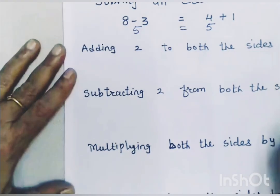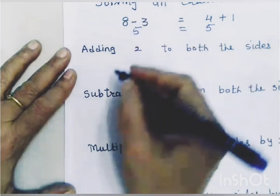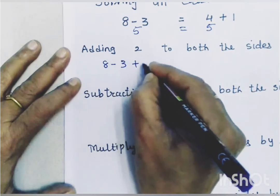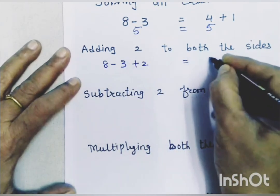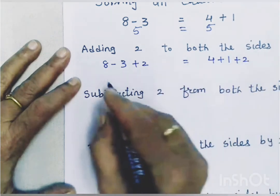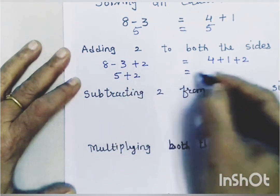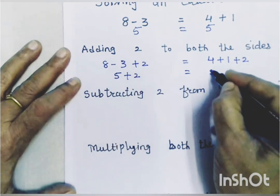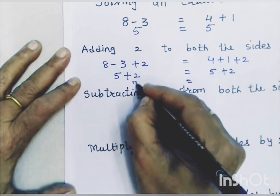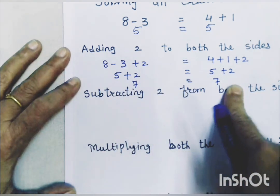Let us add 2 to both the sides. So 8 minus 3 plus 2 is equal to 4 plus 1 plus 2. That gives us 5 plus 2 equals 5 plus 2, which is 7 equals 7. The left hand side is still equal to the right hand side.